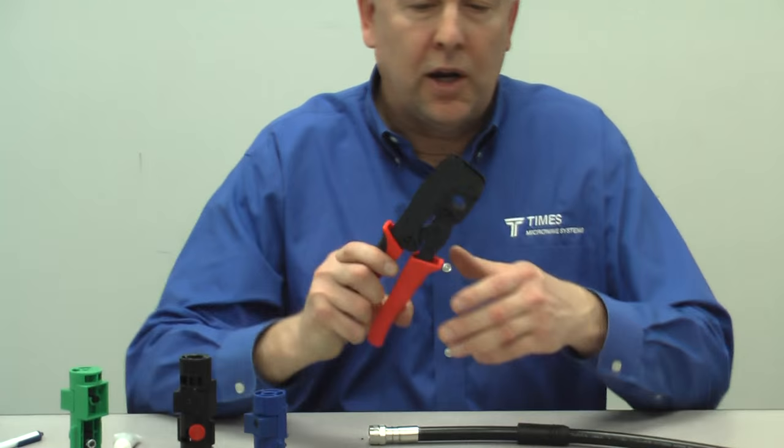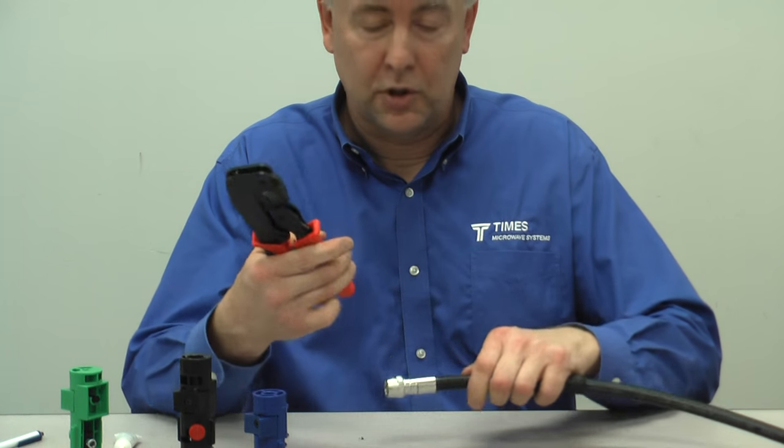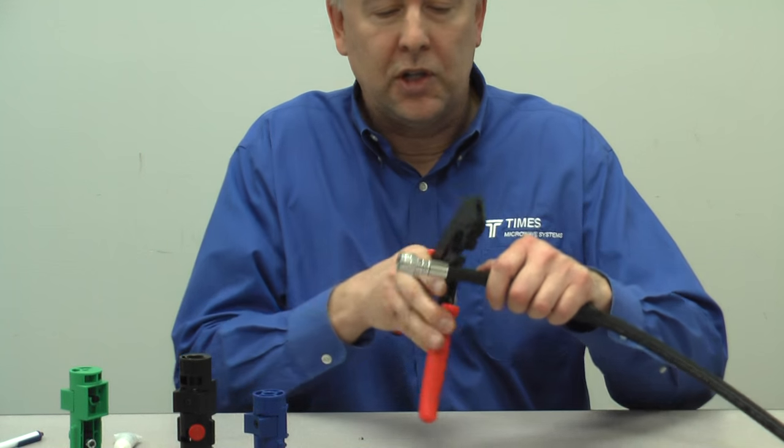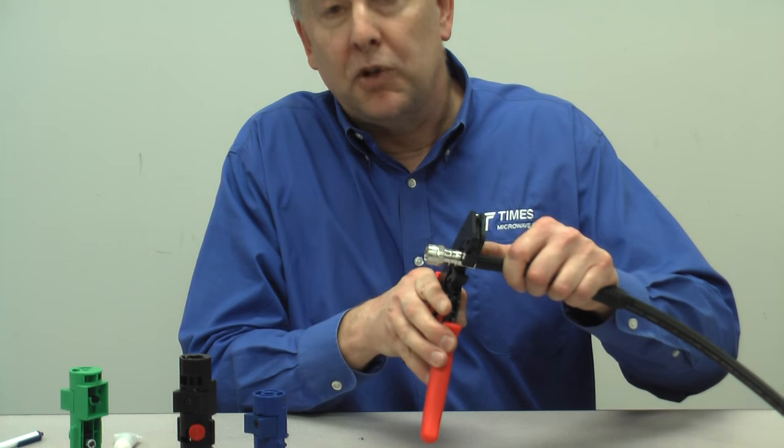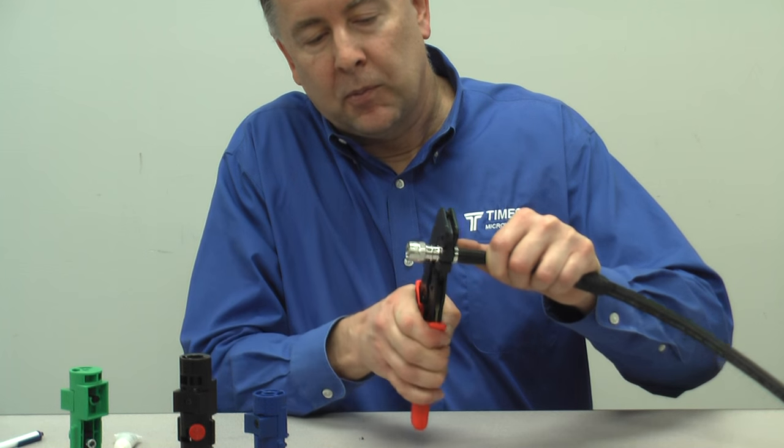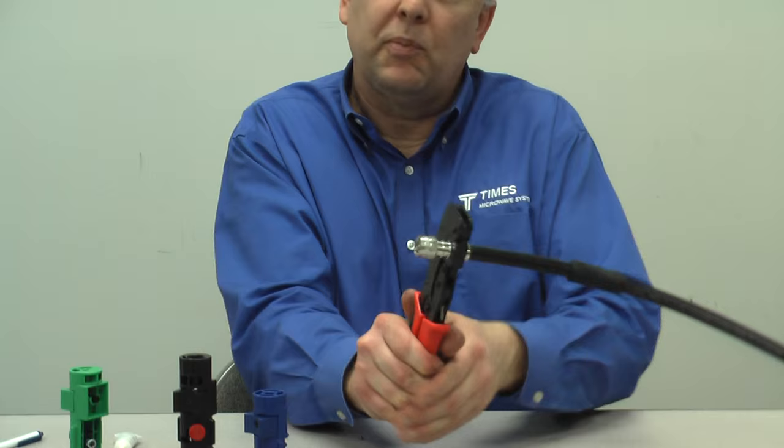You have a couple choices here now. We have our new CT-DEF 600 crimp tool. You can use the CTU universal crimp tool with the interchangeable dies, but for our purposes, the nice economical CT-600 tool. You want to crimp it just once. You want to crimp it right at the very back of the connector. Just crimp that all the way down.